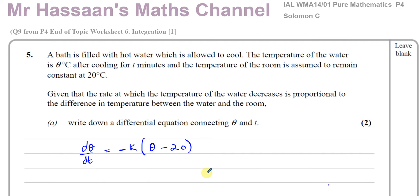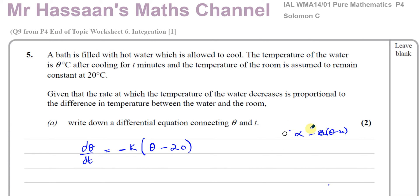If, however, you put 20 minus θ — the difference between the room and the water — then you wouldn't need to put the minus K on the outside, because that would already be a negative value. So I'm going to put θ minus 20 since the water temperature is higher, and put a minus outside to show it's a negative rate. The K is there because it's proportional to. So dθ/dt is proportional to minus K(θ minus 20). That's Part A done.